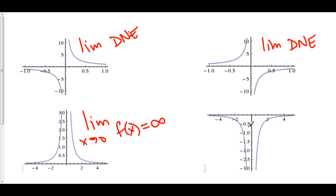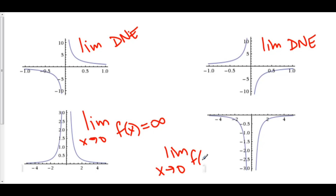Last but not least, what happens if the left-hand side goes to negative infinity and the right-hand side goes to negative infinity? Well, here the limit exists because the left-hand side is equal to the right-hand side, and is equal to negative infinity.